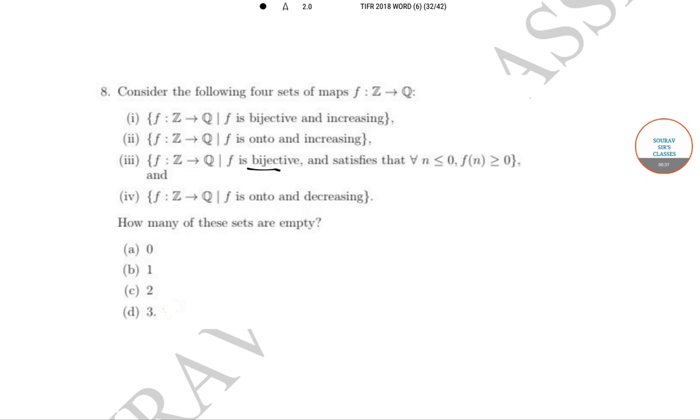Statement 1 is not possible as Z is well-ordered and Q is not. Similarly, option 2 is not possible because of the same reason, as Z is well-ordered and Q is not.